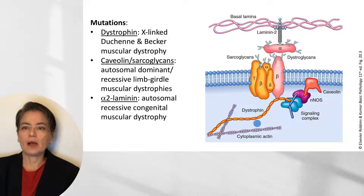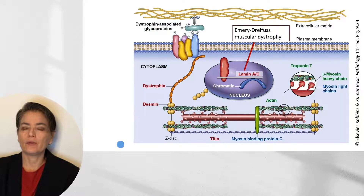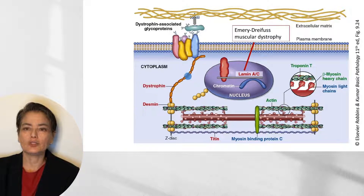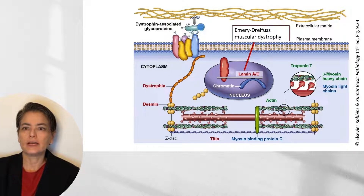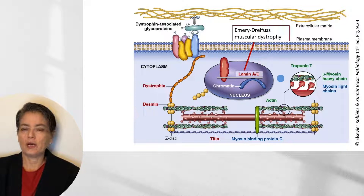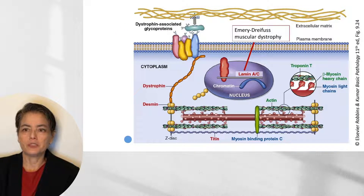Looking at a figure from the cardiac pathology chapter of Robbins and Kumar, we can see dystrophin connecting to desmin and thereby interacting with the sarcomere, as well as showing the dystrophin-associated glycoproteins and their link to the extracellular matrix. There is one other protein worth noting: lamin-AC, which we will discuss when we cover Emery-Dreyfus muscular dystrophy. This image is useful for putting all of these proteins into their broader context.